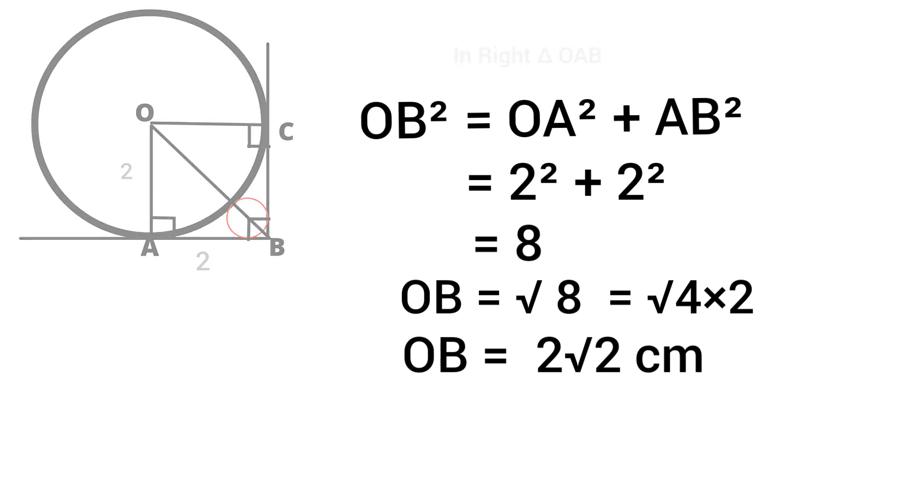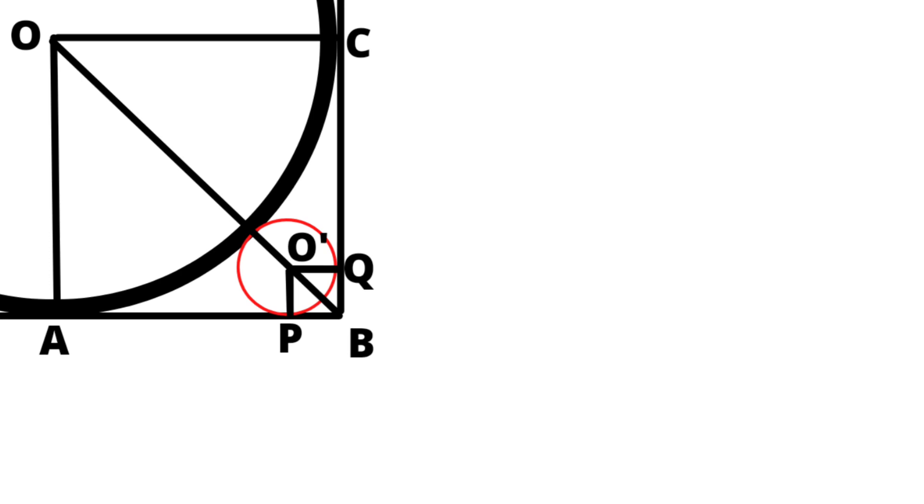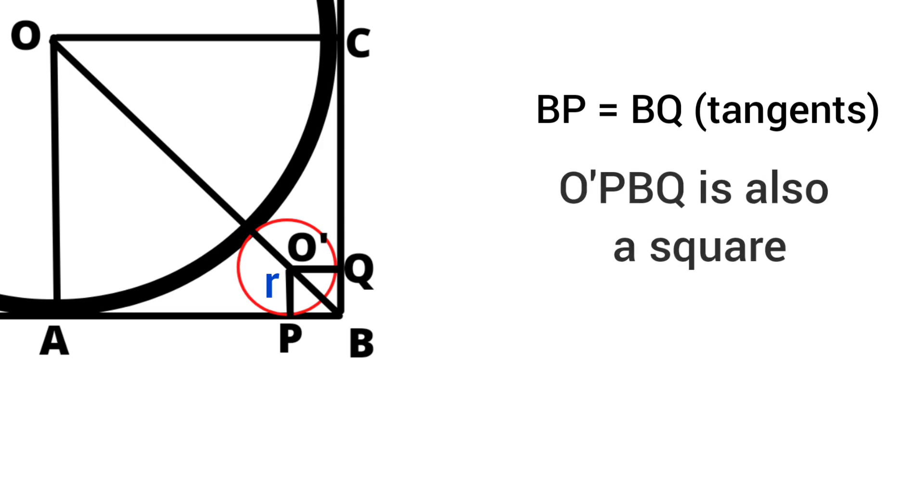Let's zoom into that smaller circle. Let's consider its center as O' and radius as R. Let's draw two radii O'P and O'Q to that smaller circle. Here BQ and BP are the tangents drawn from that external point B to that smaller circle, which makes right angles at P and Q. Therefore, O'PBQ is also a square.